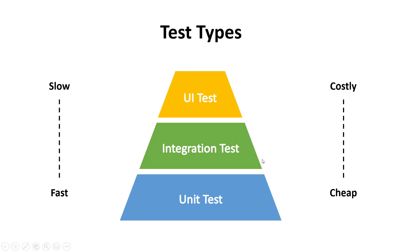The higher we get in the stack, the more costly it becomes. A beta test is really costly — if we invite a hundred thousand people to do a beta test and find a critical error, we have to go all the way back through unit testing and integration testing. So it's really, really costly up in the higher test types, but it's cheap to do unit tests.